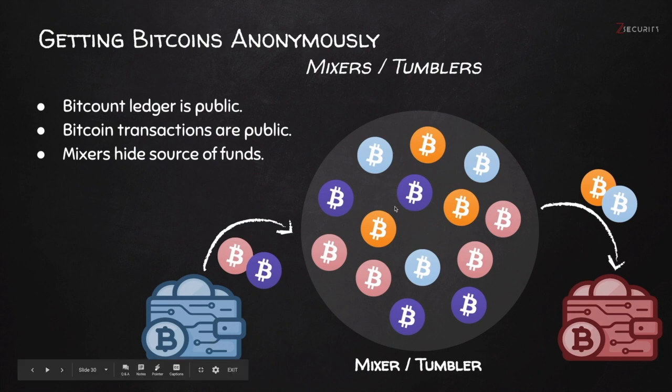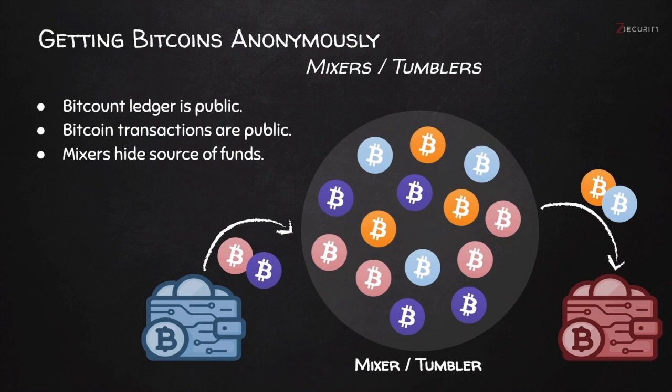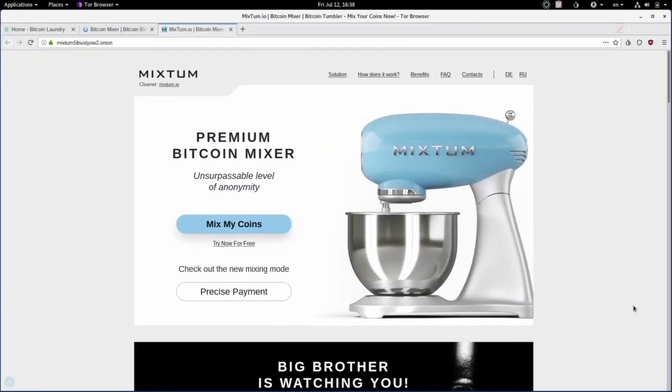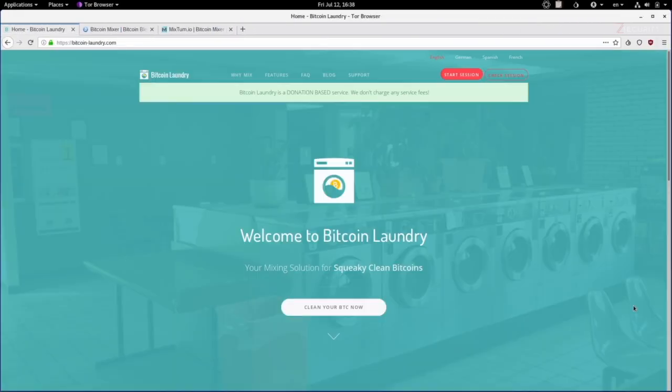The overall idea is the same: you send the money to the mixer and wait for it to arrive in the second wallet. Because there are so many mixers, you can search for 'Bitcoin mixers' on DuckDuckGo, Google, or other search engines covered earlier in the course to compare options and find what suits you best. In this lecture, three examples that are slightly different from each other will be shown.